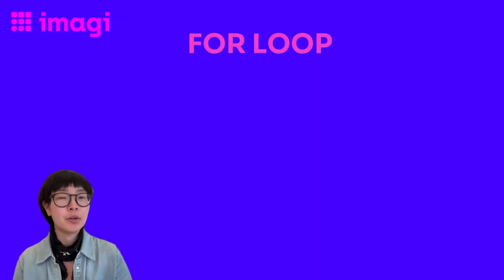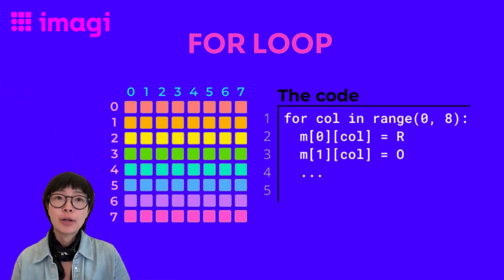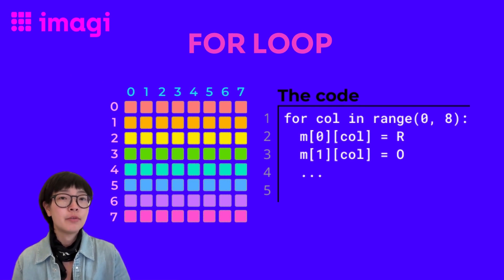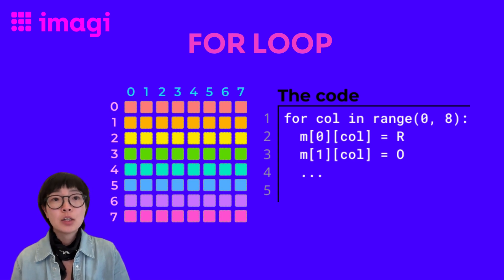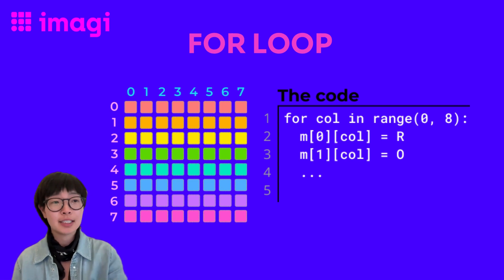Let's look at an imaginary example. If we want to paint a rainbow on our 8x8 matrix, we can write for col in range(0, 8). Then we assign each row to a different color of the rainbow, represented by the capital initial letter of the color name, and then we paint a whole row at a time without having to fill out each individual pixel one by one. That sure saves us a lot of time.